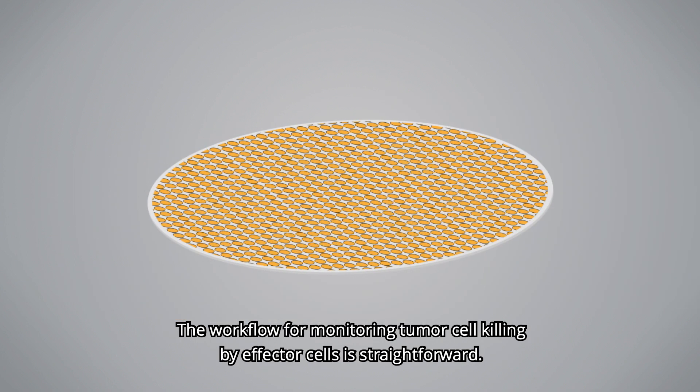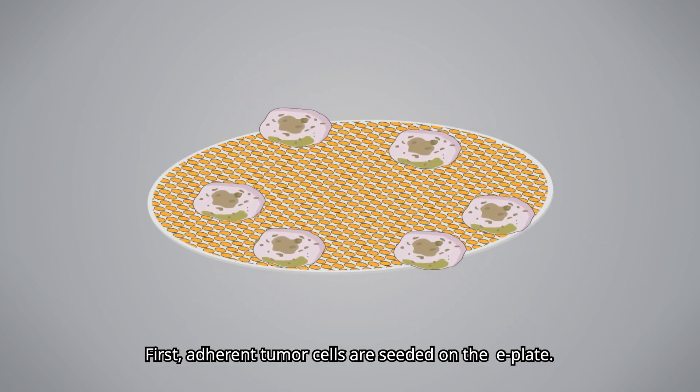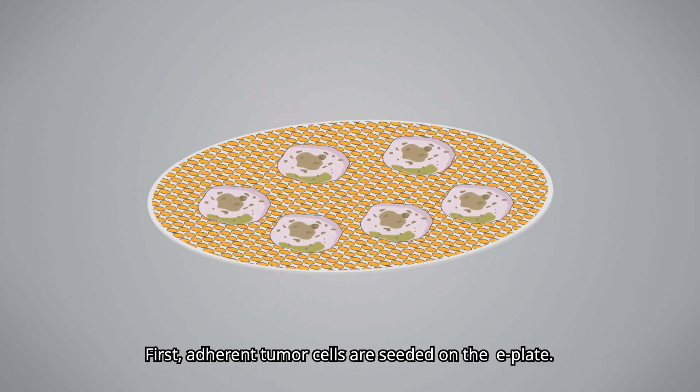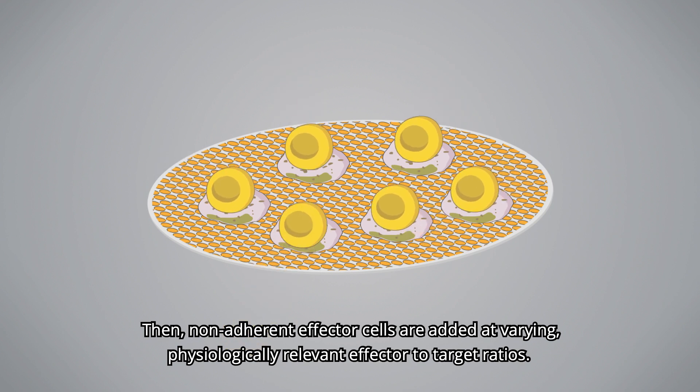The workflow for monitoring tumor cell killing by effector cells is straightforward. First, adherent tumor cells are seeded on the e-plate. Then, non-adherent effector cells are added at varying physiologically relevant effector-to-target ratios.